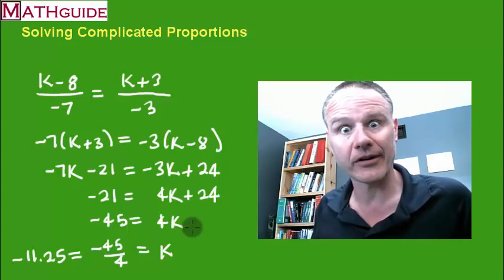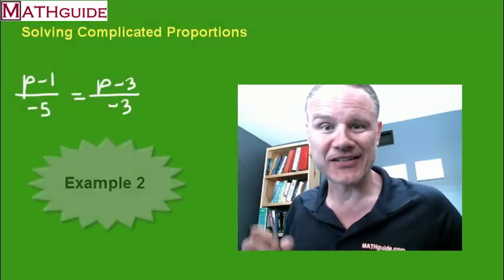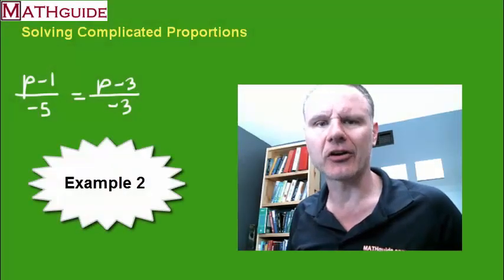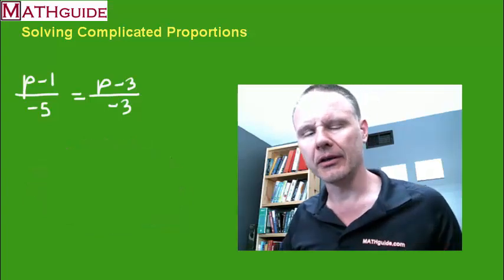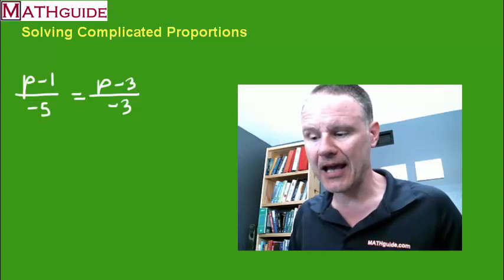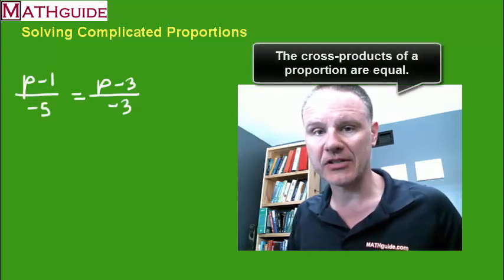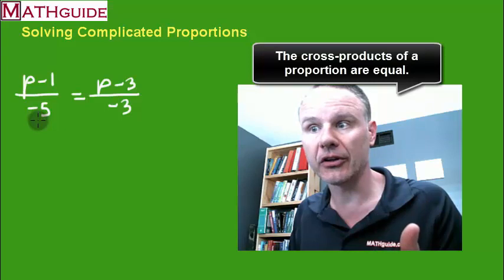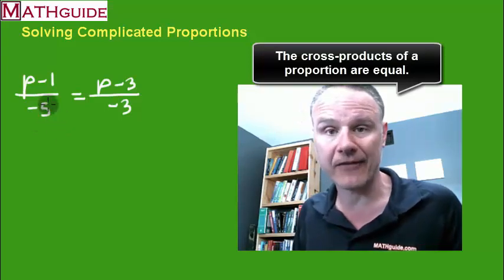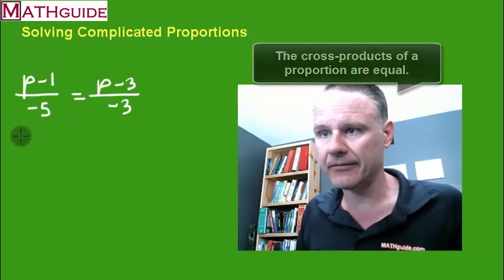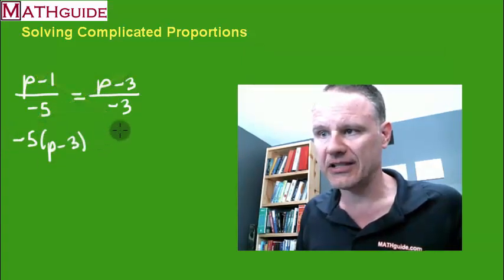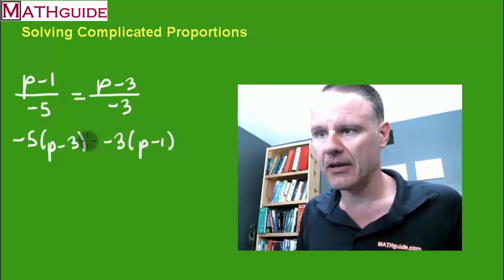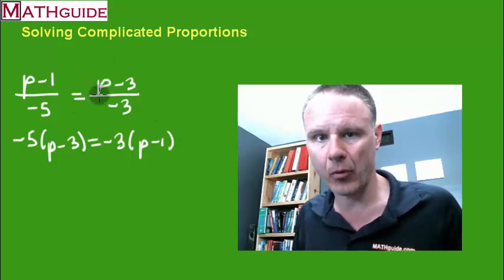Let's take a look at one more example. Alright so here we have another proportion. This time you can see the variable there is p. So we're going to solve for p in this problem. Well again this problem works the same as the other. We deal with the cross products, and the cross products have to be equal. So let's take negative 5 times p minus 3, and let's take negative 3 times p minus 1. They have to be equal if this is indeed a proportion.